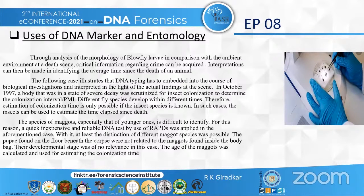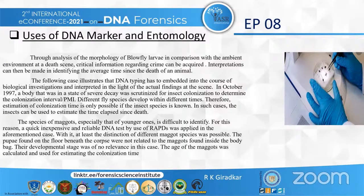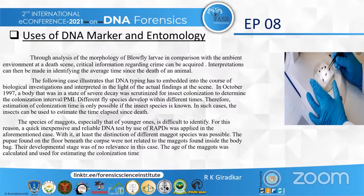In October 1997, a body in a state of severe decay was scrutinized for insect colonization to determine the colonization interval or postmortem interval. Different fly species develop within different times; therefore, estimation of colonization time is only possible if the insect species is known. In such cases, insects can be used to estimate the time elapsed since death. The species of maggots, especially younger ones, is difficult to identify. For this reason, a quick, inexpensive, and reliable DNA test using RAPDs was applied. At least the distinction of different maggot species was possible. The pupae found on the floor beneath the corpse were not related to the maggots found inside the body, and the age of maggots was calculated and used for estimating the colonization time.